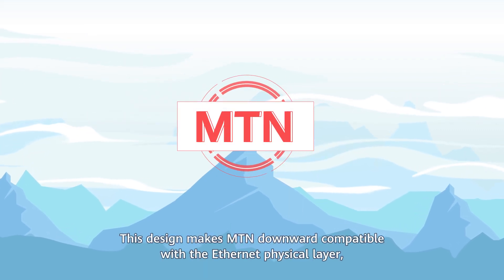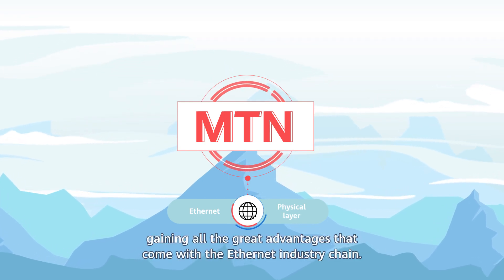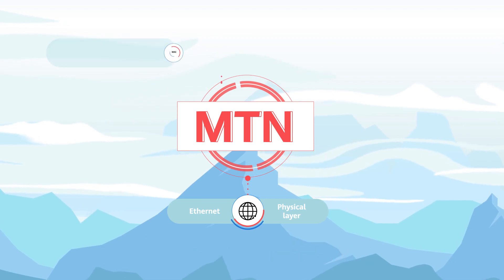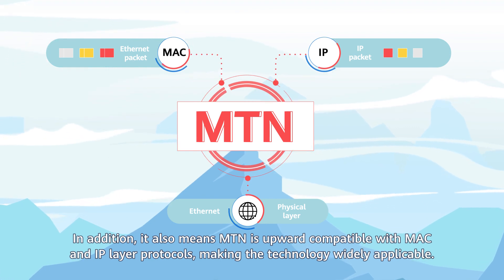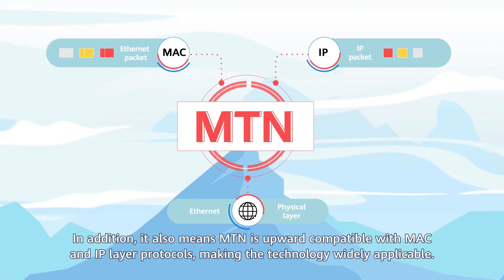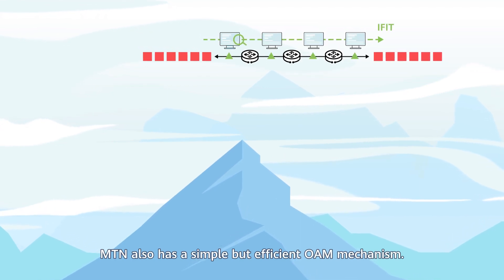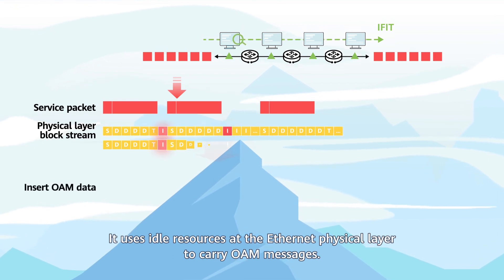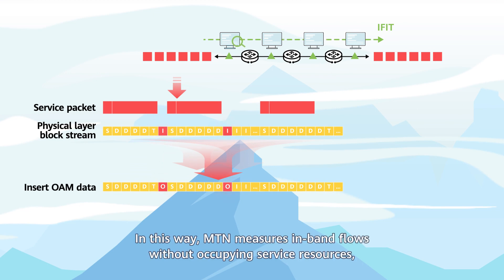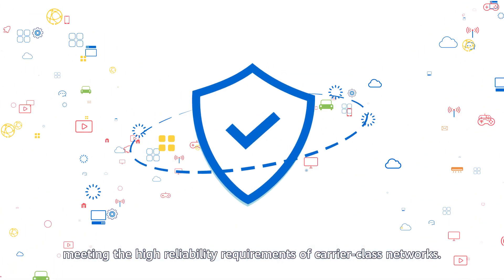This design makes MTN downward compatible with the Ethernet physical layer, gaining all the great advantages that come with the Ethernet industry chain. In addition, MTN also has a simple but efficient OAM mechanism. It uses idle resources at the Ethernet physical layer to carry OAM messages. In this way, MTN measures in-band flows without occupying service resources, meeting the high reliability requirements of carrier-class networks.